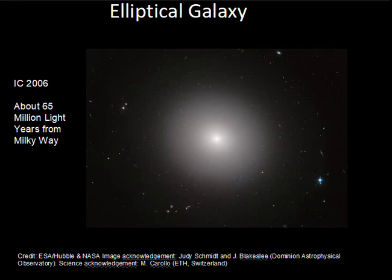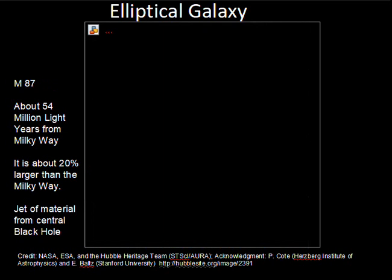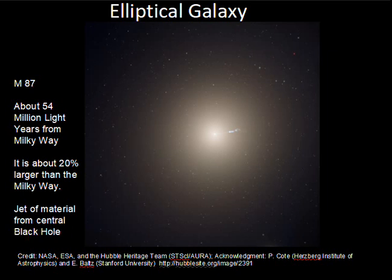The old stars give elliptical galaxies a characteristic yellowish color, compared to spiral galaxies that tend to be more blue-white, because spirals are currently forming stars, and some of those are very hot and blue-white in color. Another example is about 210 million light years from the Milky Way, about one and a half times the size of the Milky Way — again, smooth light distribution with higher density of stars towards the center. And M87, 54 million light years away, a little bit larger than the Milky Way, has an interesting jet of material coming out from the center, which is probably an indicator of a supermassive black hole at the center of this galaxy.